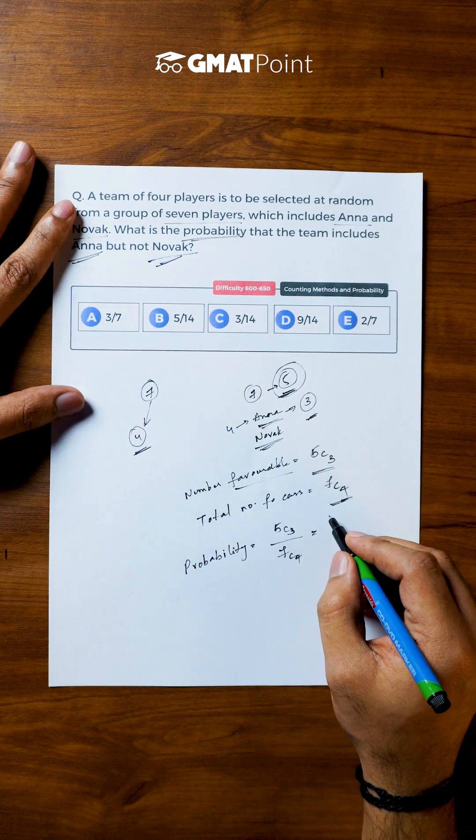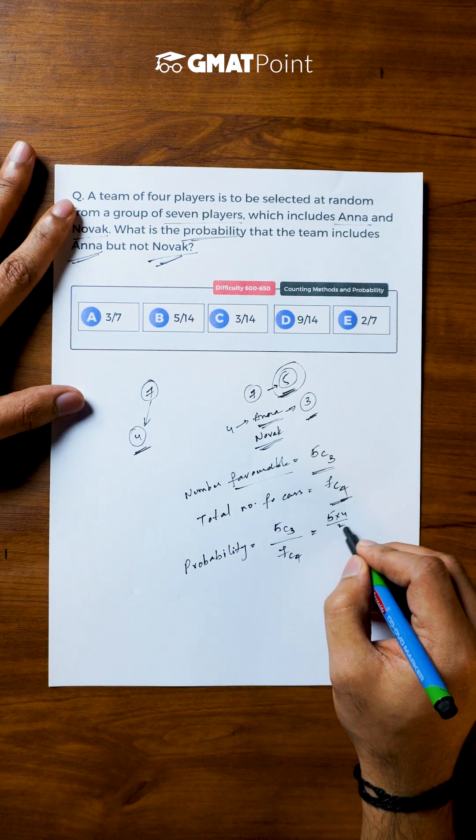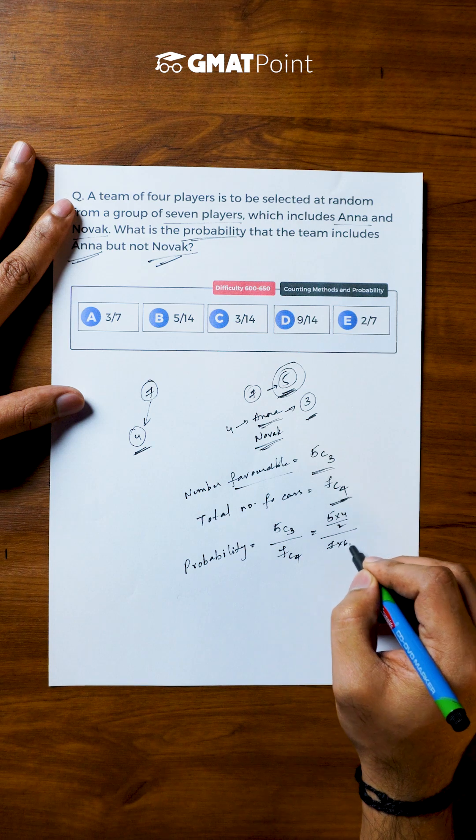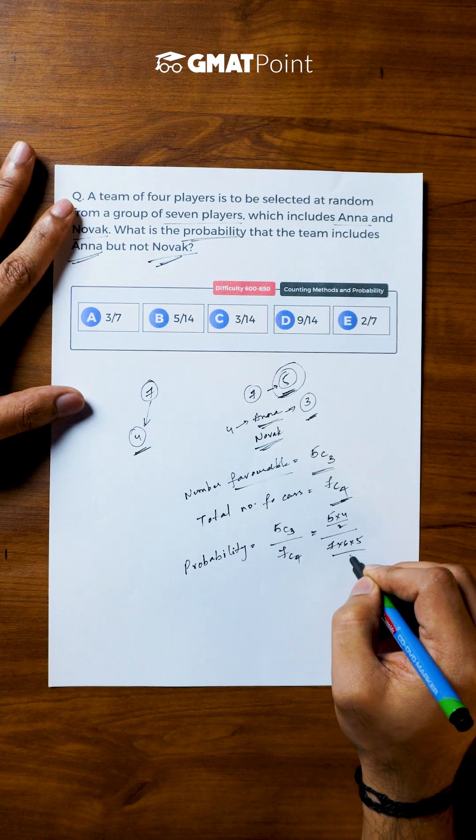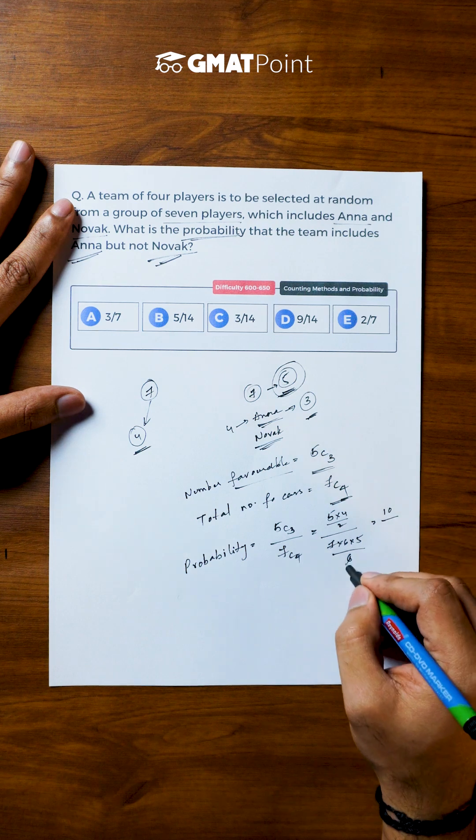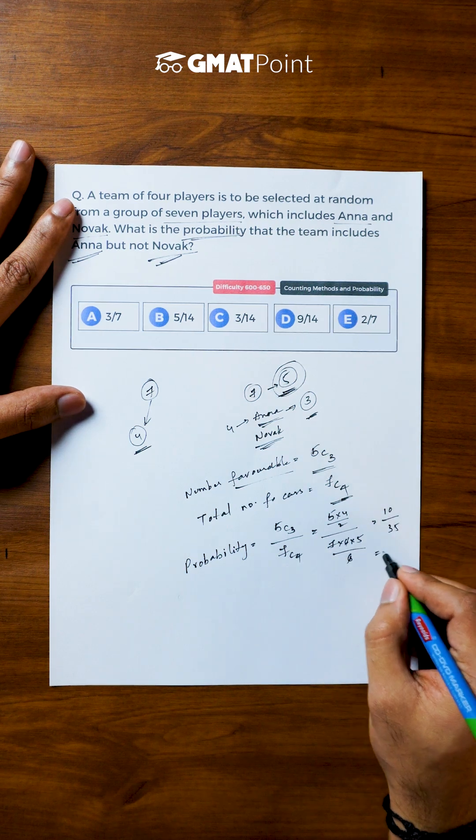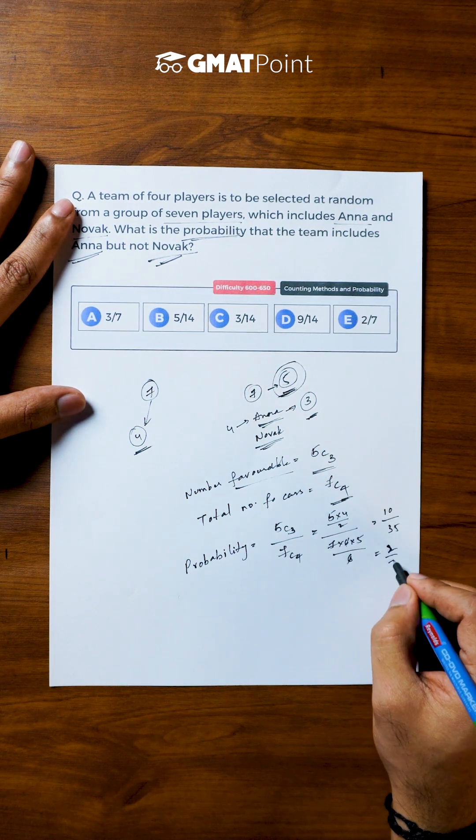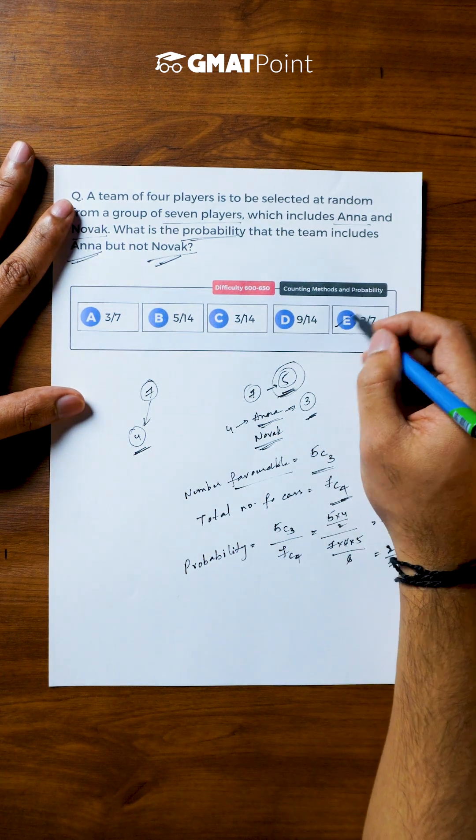This is nothing but 10 by 35 that is equal to 2 by 7. So the correct answer is Option E.